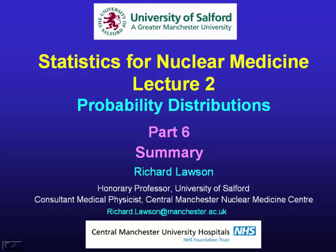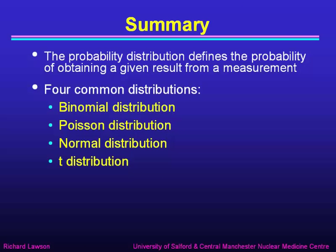This is the sixth part of my lecture on probability distributions, in which I'll provide a summary of what I've said so far. We've talked about probability distributions, which define the probability of obtaining a given result from a measurement, and we looked at four common distributions: the binomial distribution, the Poisson distribution, the normal distribution, and the t-distribution.